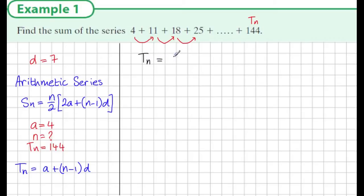Our a is 4 and n minus 1 times d is 7, and we know that this term is equal to 144. Now simplifying this, we have 4 plus 7n minus 7 is equal to 144. Just simplifying the left hand side, we have 4 minus 7, which is minus 3. Now if we add 3 to both sides, this gives us that 7n is equal to 147.